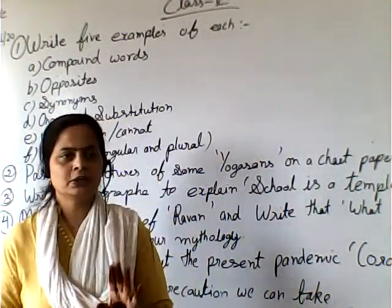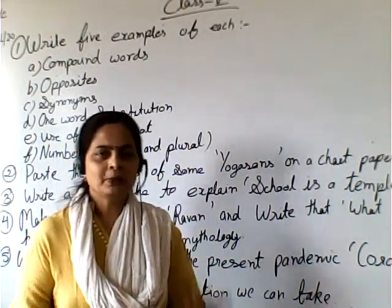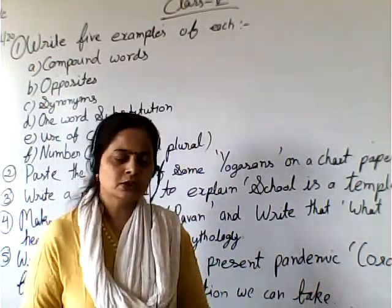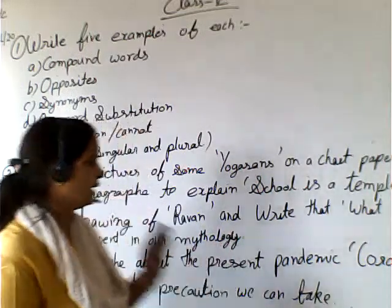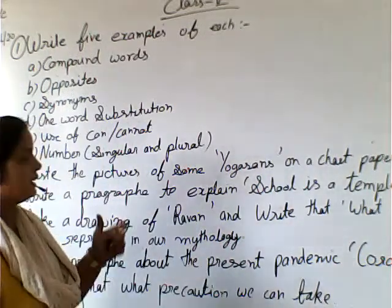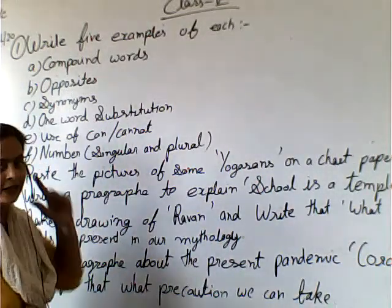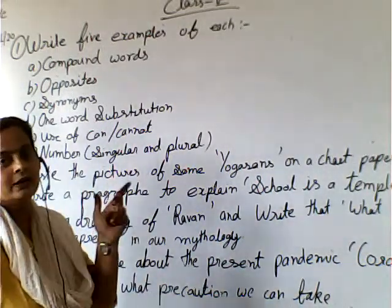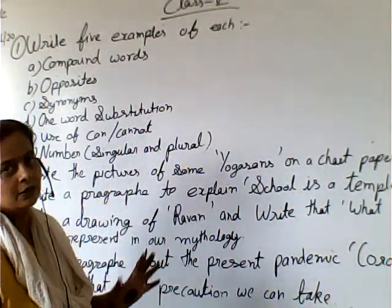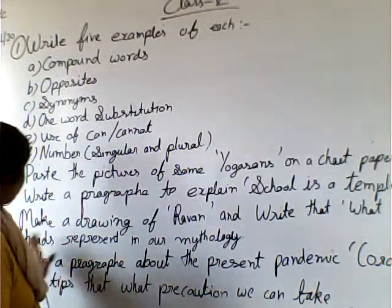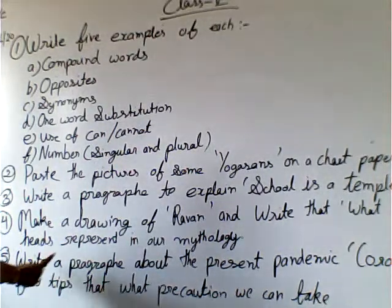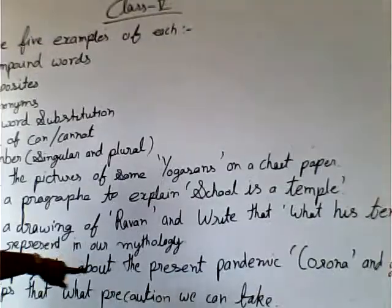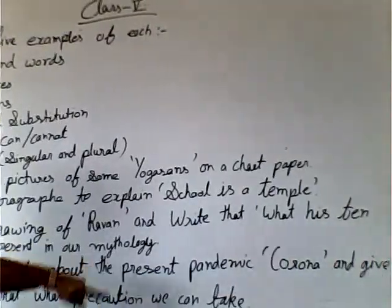You have the full freedom, with your parents' permission. Now the fifth task is to write a paragraph about the present pandemic.